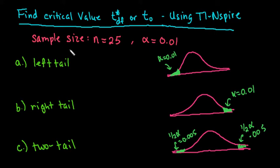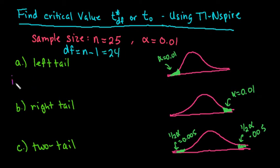In order to do this we need to know the degrees of freedom. The degrees of freedom is always your sample size minus one, so we would use 24. The command we're going to use is INVERSE T. The two things you need to know are your area and your degrees of freedom.